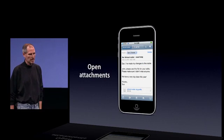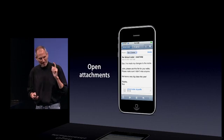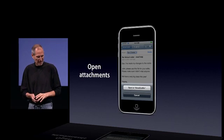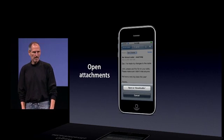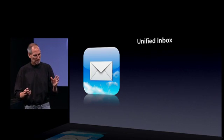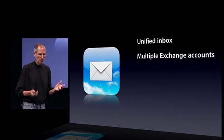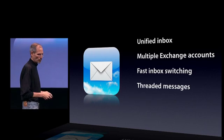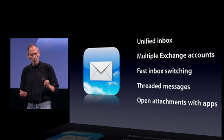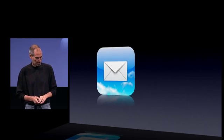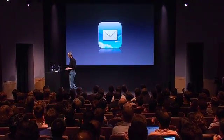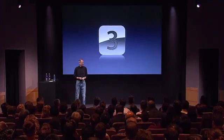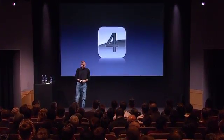And open attachments — the ability to get an attachment in email, tap on it, and open it with an app from the App Store. This is really great. In this case, it's OmniGraph, and I can just tap it and it'll open with the app. So, some new features in mail — there's lots more, but the biggest ones are the unified inbox with multiple exchange accounts, fast inbox switching, threaded messages, and you can open attachments with apps. So that is number three. Let's go to number four.